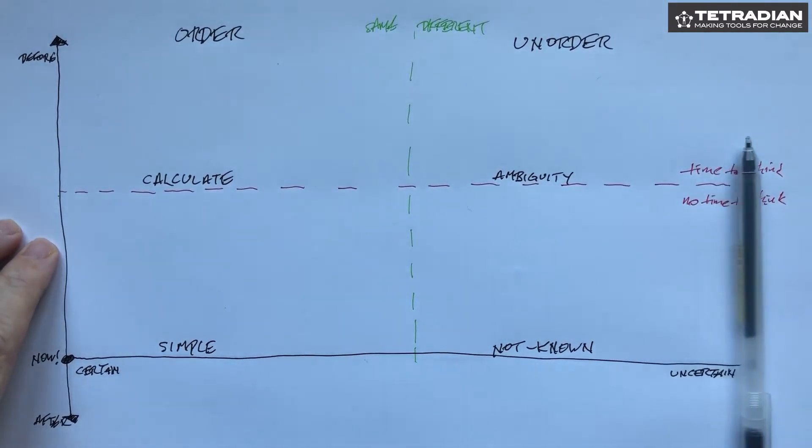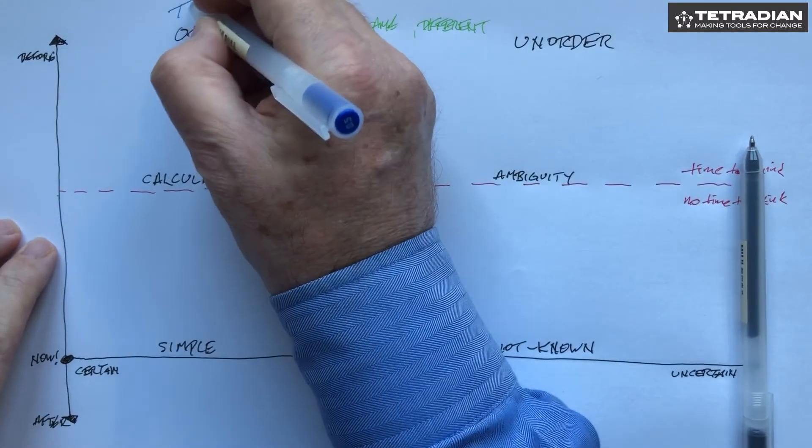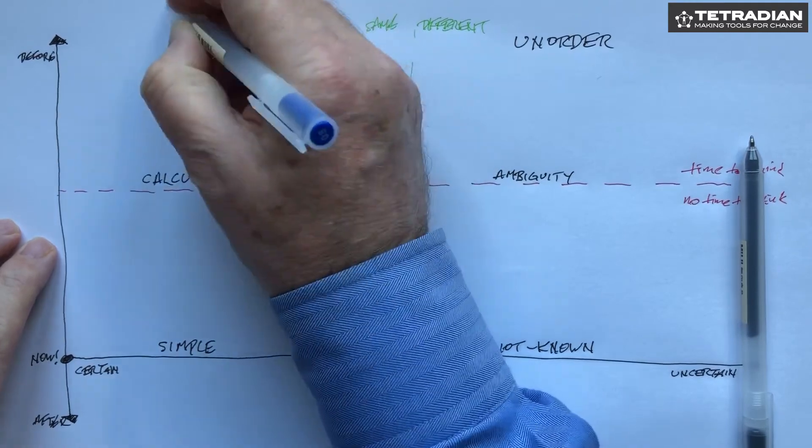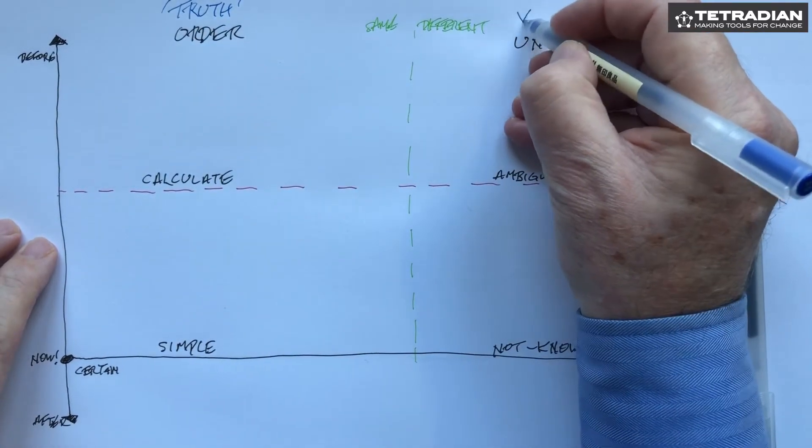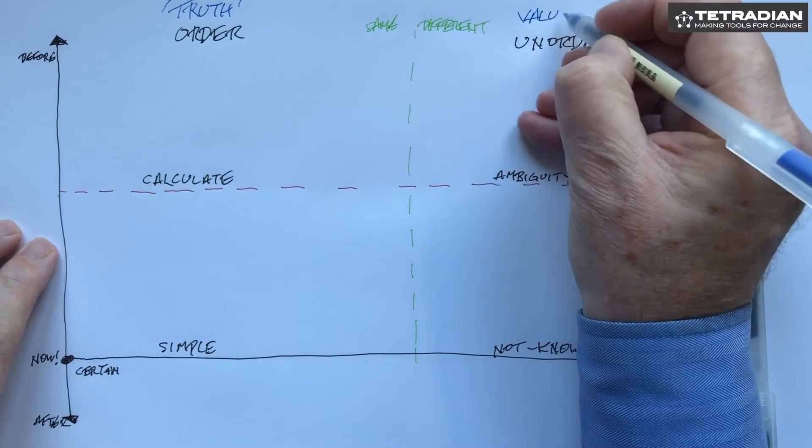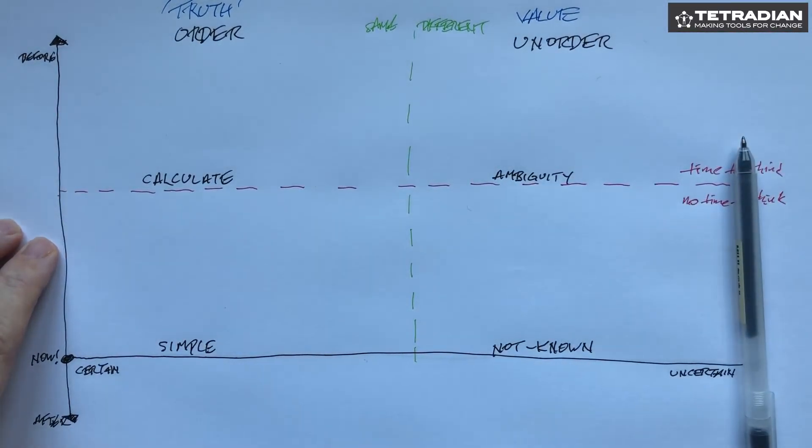So to some extent what we have now is a distinction on one side between truth, which I'll put capitals or quotes around, as opposed to value or usefulness. Is it useful? We don't have time to concern ourselves with whether it's so-called true.